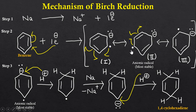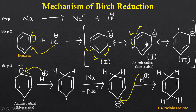We get three resonating structures. Among these, the second resonating structure is the most stable because the unpaired electron and the negative charge are at maximum distance from each other, so repulsion is minimum and stability is greater. This structure participates in the further reaction.